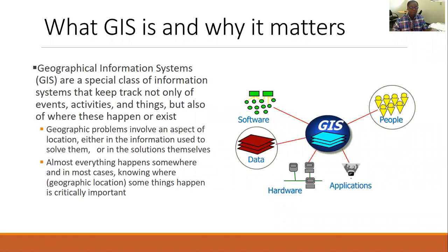Let's try to understand what GIS is. GIS is a short form of geographic information systems. It is a science and technology that helps us to understand our world. This is possible because almost everything we do happens somewhere. Geographic problems require a geospatial approach to solve them, and for that reason, systems have been put in place in order to explore the world.